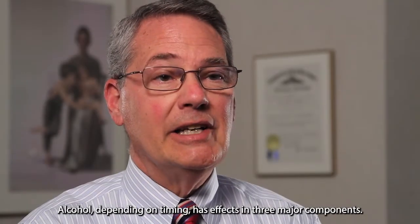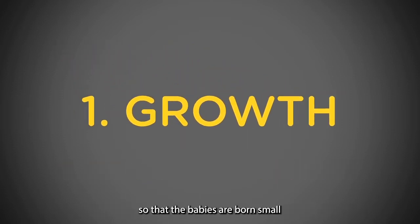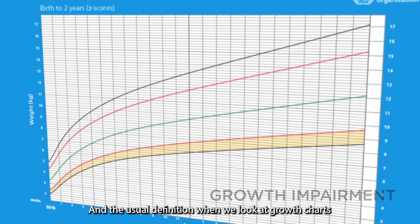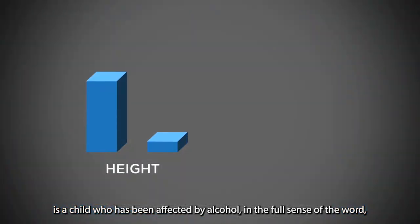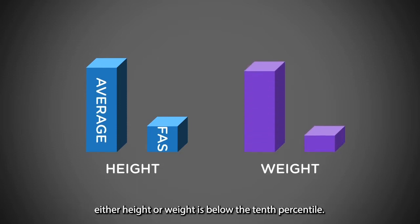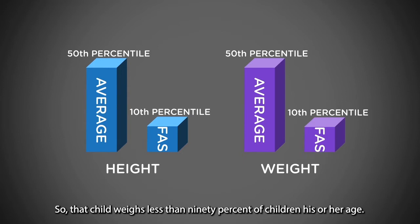Alcohol, depending on timing, has effects in three major components. Number one, alcohol can affect growth, so that babies are born small and continue to be small all their lives. The usual definition, when we look at growth charts, is a child who's been affected by alcohol — either height or weight is below the tenth percentile, meaning that child weighs less than 90 percent of children his or her age.